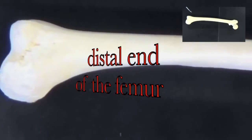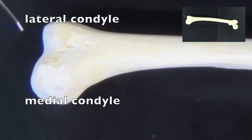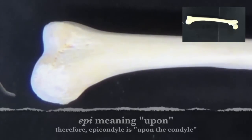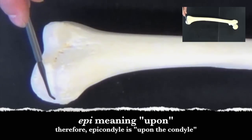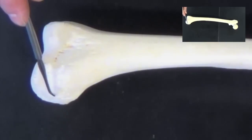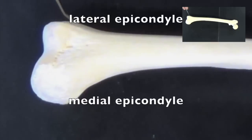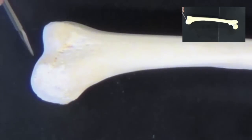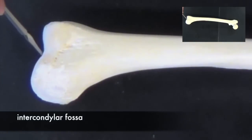At the distal portion, we have the medial condyle and the lateral condyle, and then upon the condyles we have the epicondyles — the medial epicondyle and the lateral epicondyle. Between the two condyles, we have the intercondylar fossa.